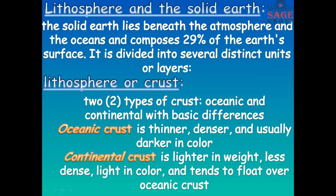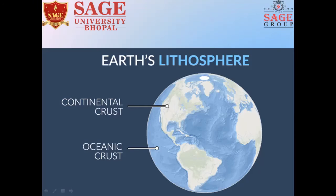There are two types of crust. One is oceanic crust, and another is continental crust. Oceanic crust is thinner, denser, and usually darker in color. Continental crust is lighter in weight, less dense, and light in color. Here you can see the oceanic crust and continental crust of earth's lithosphere.